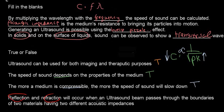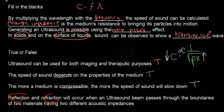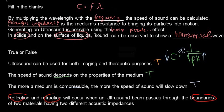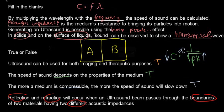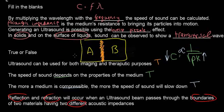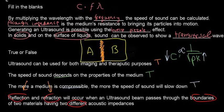Reflection and refraction will occur when an ultrasound beam passes through the boundaries of two materials having two different acoustic impedances. This should make sense because if you have material A and material B with two different acoustic impedances, we have a border of two different acoustic impedances.